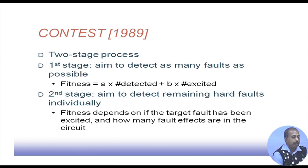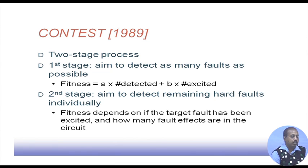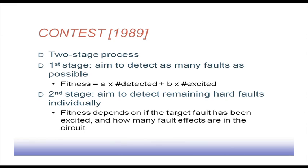Initially, since we are trying to detect as many faults as possible, that was the fitness function used. However, it does not account for faults which are detected multiply by different test vectors. An individual may be detecting a large number of faults, but they might have already been detected by some other patterns as well. These are the problems with the first stage.